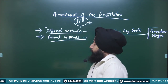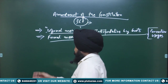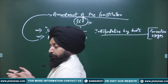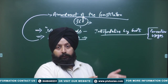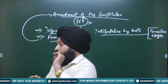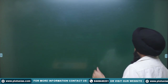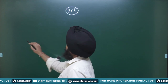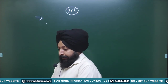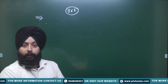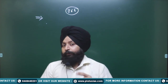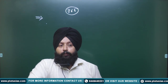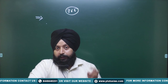Moving on to formal methods. The formal method to amend the constitution is through Article 368, which expressly provides the procedure for constitutional amendment. Under Article 368, there are generally three methods, though broadly we can say two main methods under Article 368, plus a third method of amendment by ordinary legislative process.